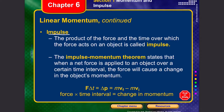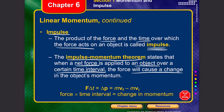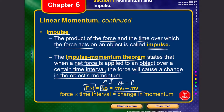Next, let's talk about impulse. Impulse is the product of force and the time over which the force acts on an object. We use the impulse-momentum theorem to state that when a net force is applied to an object over a time interval, it causes a change in momentum. This is written as F·Δt = Δp = pf − pi = mvf − mvi.